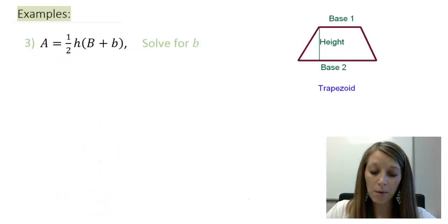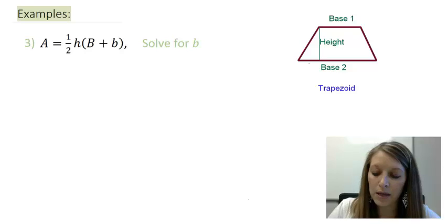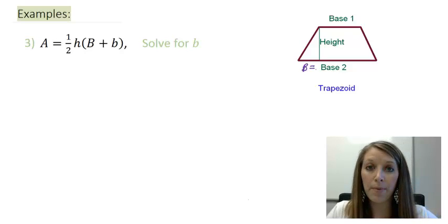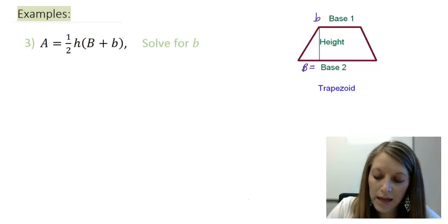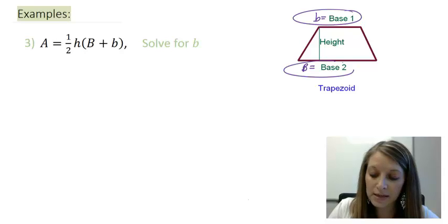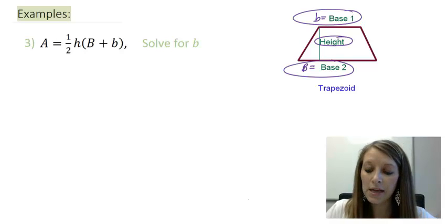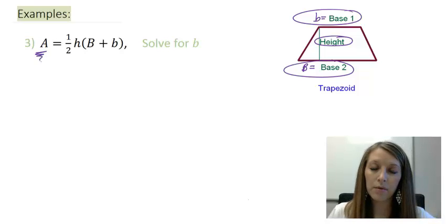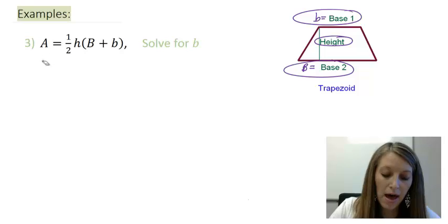A little bit more complicated example here. A equals one-half h times a capital B plus a lowercase b. And what this equation stands for is the area of a trapezoid. So, my capital B can stand for my long base, or my base 2 in this picture, and my lowercase b stands for the length of my short base, or base 1 in this picture. So, if I want to figure out my total area, and I know my base length and how high my trapezoid is, then that tells me the total area here.